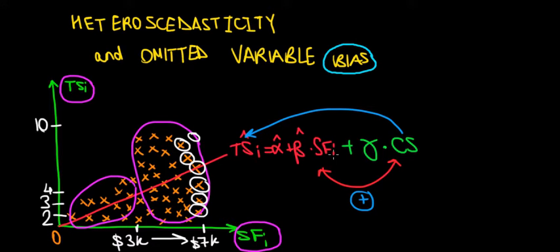Recall, we must have the correlation between the independent variable and the omitted variable. This is the omitted variable in this case. And the omitted variable must affect the outcome variable. So that's what's happening over here.